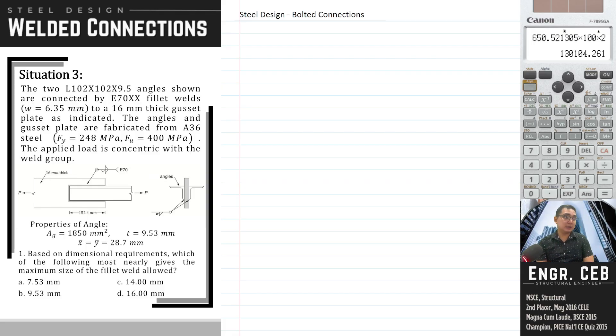The two L102 by 102 by 9.5 angles are connected by E70xx fillet welds to a 16 millimeter thick gusset plate. The angles and gusset plate are fabricated from A36 steel. The applied load is concentric with the weld through. Based on dimensional requirements, which of the following most nearly gives the maximum size of the fillet weld allowed?